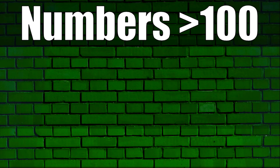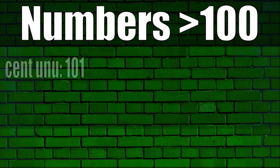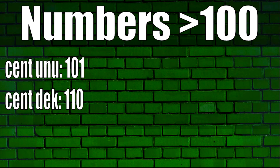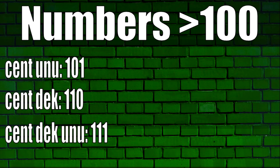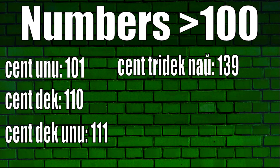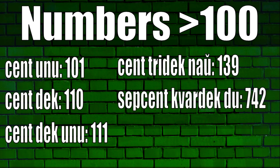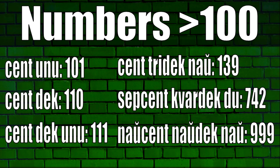For numbers bigger than 100 that aren't multiples of 100, you say the hundreds place, with a space, followed by the tens place, with another space, followed by the ones place. Some examples: cent unu 101. We don't need to say nul for the tens place — if no number is given, the tens place is just zero. Cent dek 110. Cent dek unu 111. Cent tridek nau 139. Sep cent kvardek du 742. Naucent naudek nau 999.